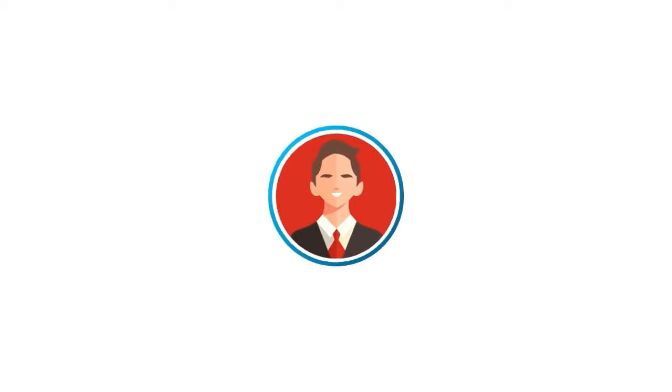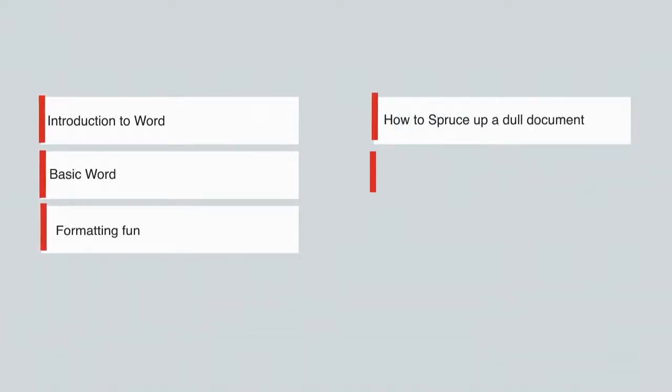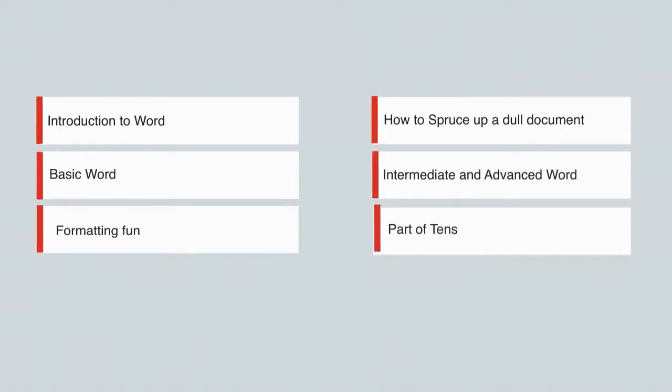Once you achieve a readiness score of 90% or more, you will receive a certificate of course completion from UCertify. Upon course completion, you will gain an understanding about the following concepts: Introduction to Word, Basic Word Formatting Fun, How to Spruce Up a Dull Document, Intermediate and Advanced Word, and Part of TENS.